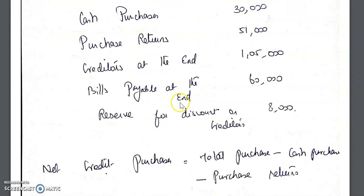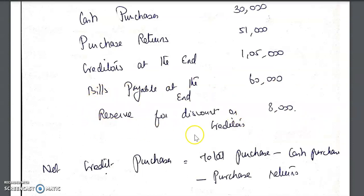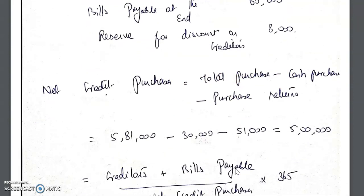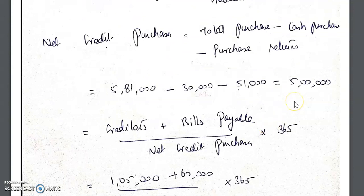Reserve for discount on creditors is given in the sum, but for the creditors turnover ratio this item should be omitted. They include it to check whether students know it should not be used in the calculation. So please omit any reserve for discount on creditors. First, we calculate net credit purchases: net credit purchase = total purchases minus cash purchases minus purchase returns = 5,81,000 minus 30,000 minus 51,000 = 5,00,000.